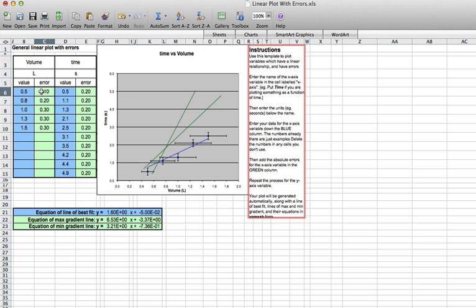Now, the linear plot with errors is not going to work unless we enter the error in here. So the error, remember, is generally half the smallest increment. So when we were reading off the volumes there, we said 25 millilitres would be a reasonable error. So we enter that in in litres, 0.025. And we have the same error for every one of those volumes, 0.025 litres.